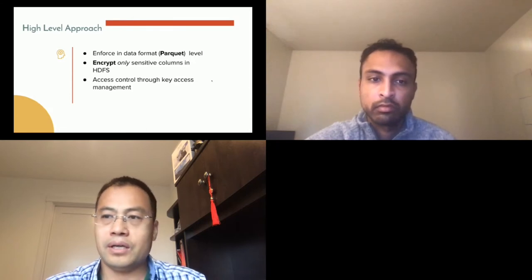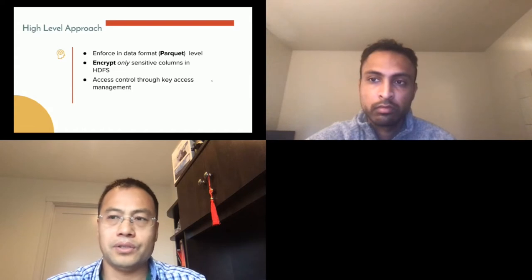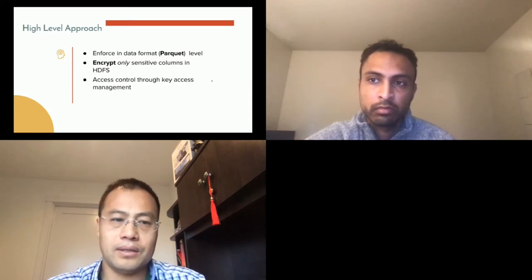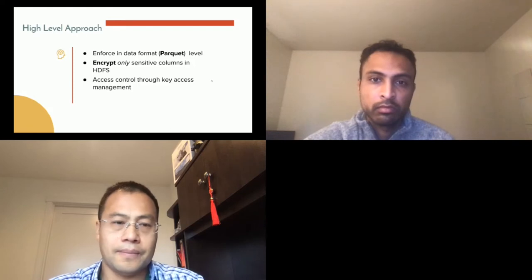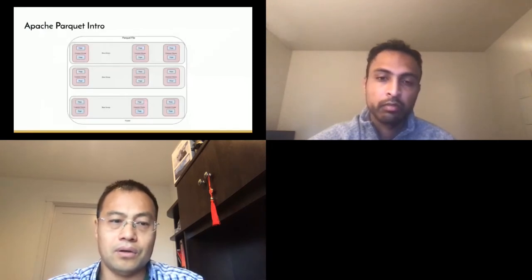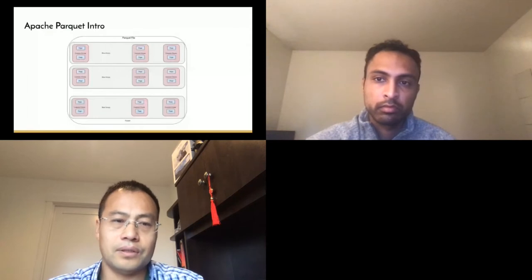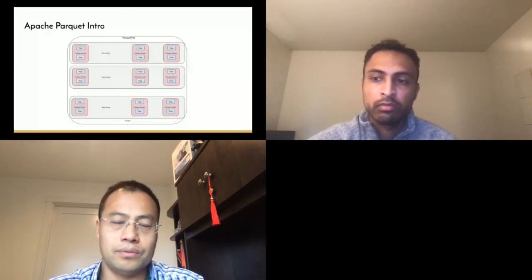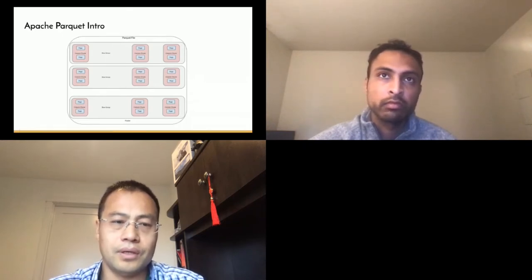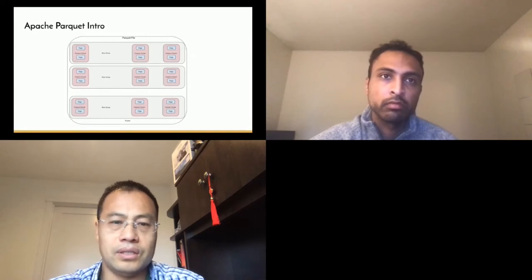Let's look at Parquet in more detail. Parquet is a columnar storage format — data from the same column is stored together, which makes the data smaller and queries faster. For a given Parquet file, there's a footer containing the schema, metadata, and all information needed to access the file. The data is divided into row groups, and each row group is divided into column chunks, with each column chunk corresponding to a column. Each column chunk is further divided into pages, and the page is the unit at which encoding, compression, and encryption are performed.